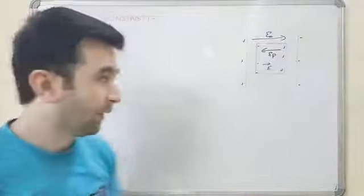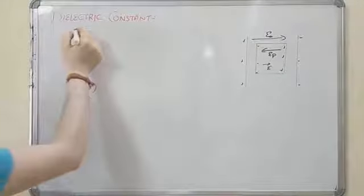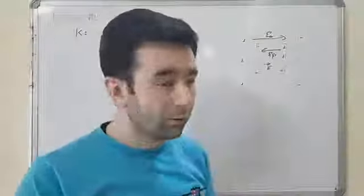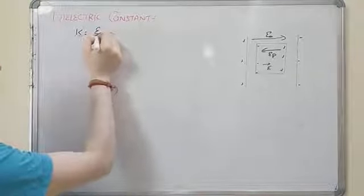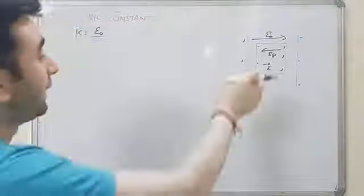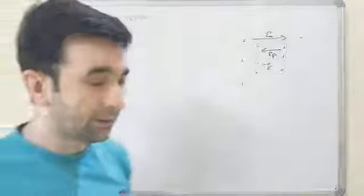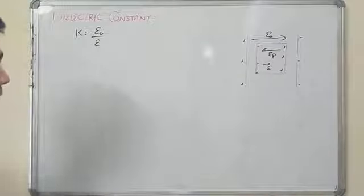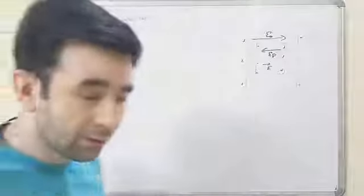The dielectric constant K is the ratio of the applied electric field E₀ to the net electric field E. So K = E₀/E. This is the fundamental relation of the dielectric constant, represented by K.